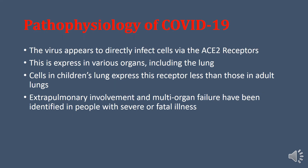Regarding the pathophysiology of COVID-19, SARS-CoV-2 appears to directly infect cells via ACE2 receptors — angiotensin-converting enzyme 2. This is the entry point of the virus. ACE2 is present in the lungs, heart, intestine, kidney, and arteries. This enzyme is found in greater numbers in older patients, diabetics, and hypertensive patients, and in lesser numbers in children.